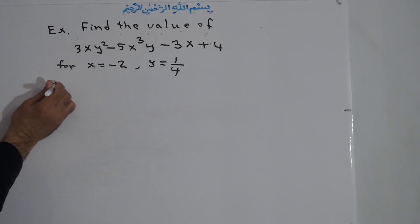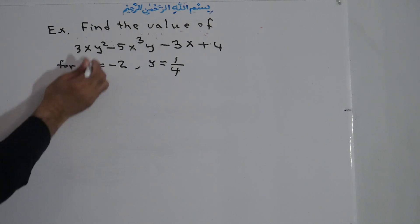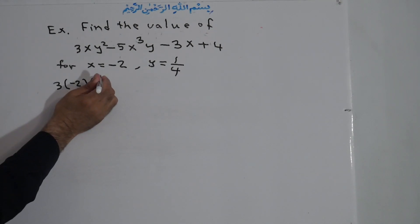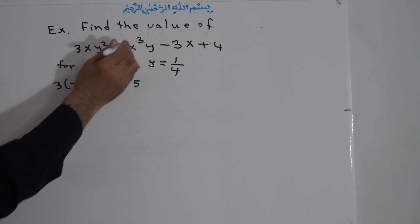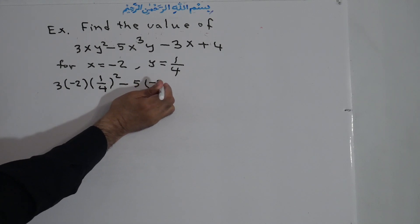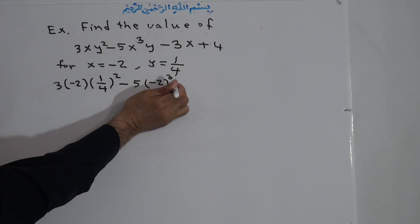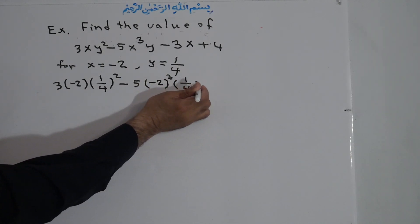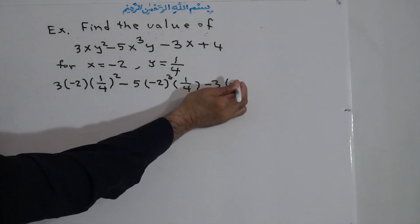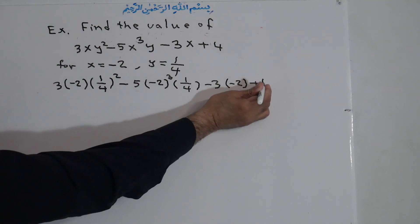Like 3, instead of x we write the value of x. X is equal to -2. We put in parenthesis to not mix one with the other. Y to the power of 2, instead of y we can write 1/4 to the power of 2, minus 5, x instead of x we write what is the value of x, -2, -2 to the power of 3, y, y is 1/4, minus 3, x, x is -2, plus 4.